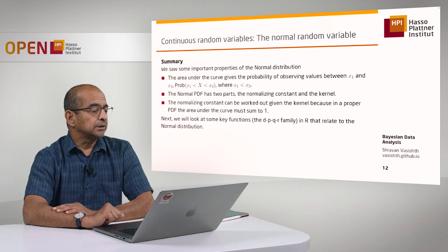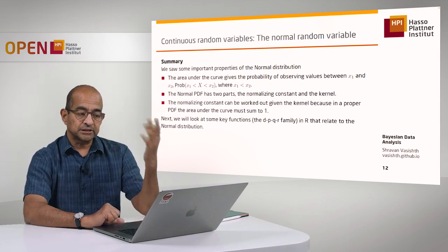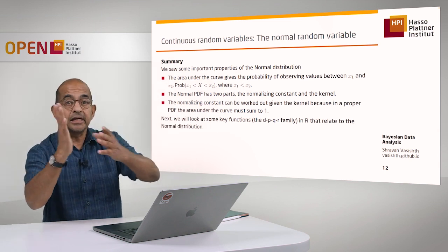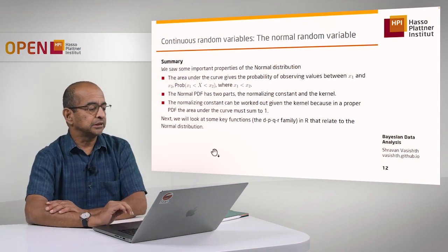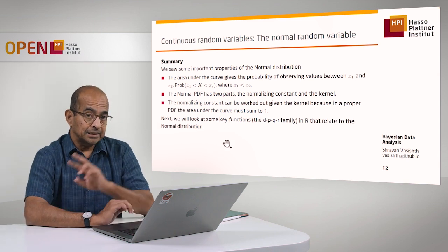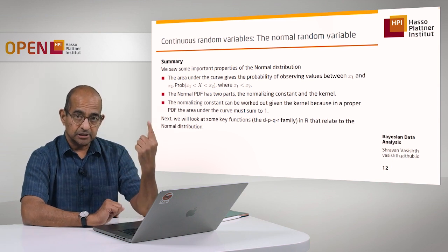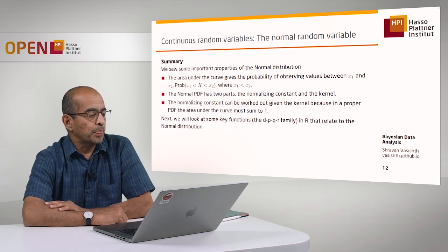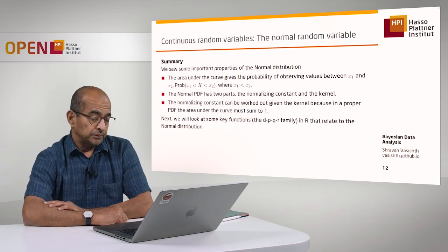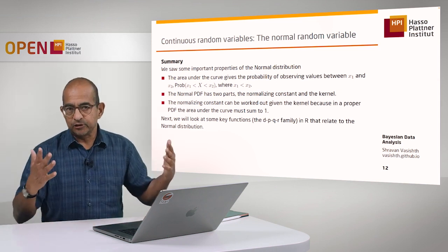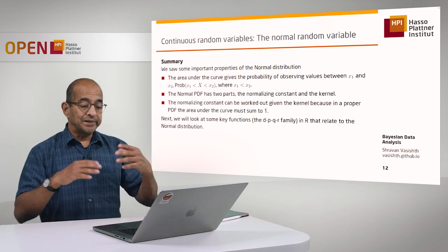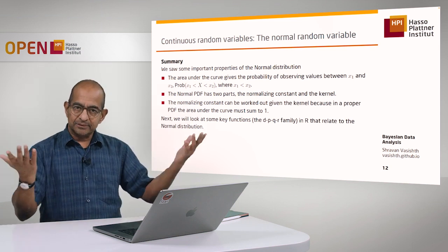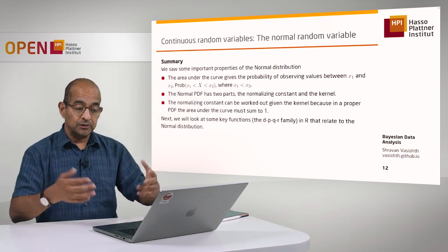So the story so far: we looked at important properties of the normal distribution, we figured out that the area under the curve gives us the probability of observing a range of possible values, and we can calculate things like the probability of observing less than 500 using the cumulative distribution function. The normal PDF has two parts — the normalizing constant and the kernel. What we're going to do next is use the same dpqr family of functions I showed earlier to compute useful quantities, as we did for the Bernoulli and binomial, but now in the continuous space.